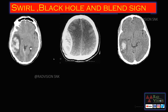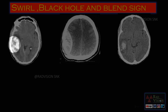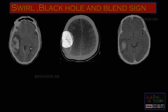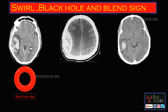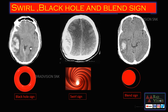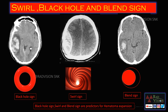Next we will see the swirl sign, black hole sign, and blend sign — three in a row. Here is the black hole sign; here is the swirl sign with alternating hypodense and hyperdense areas; and here you can see the blend sign where two different densities blend with each other. These three signs — swirl sign, black hole sign, and blend sign — are indicators for hematoma expansion. Whenever you see these signs, take a follow-up scan and assess for hematoma expansion.